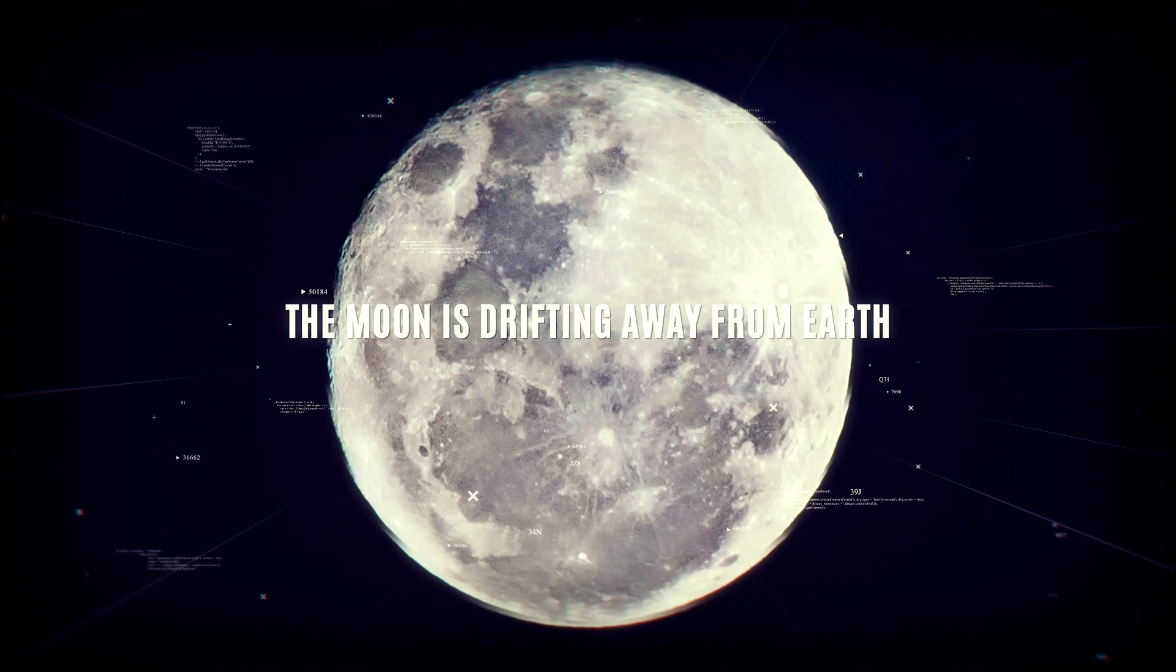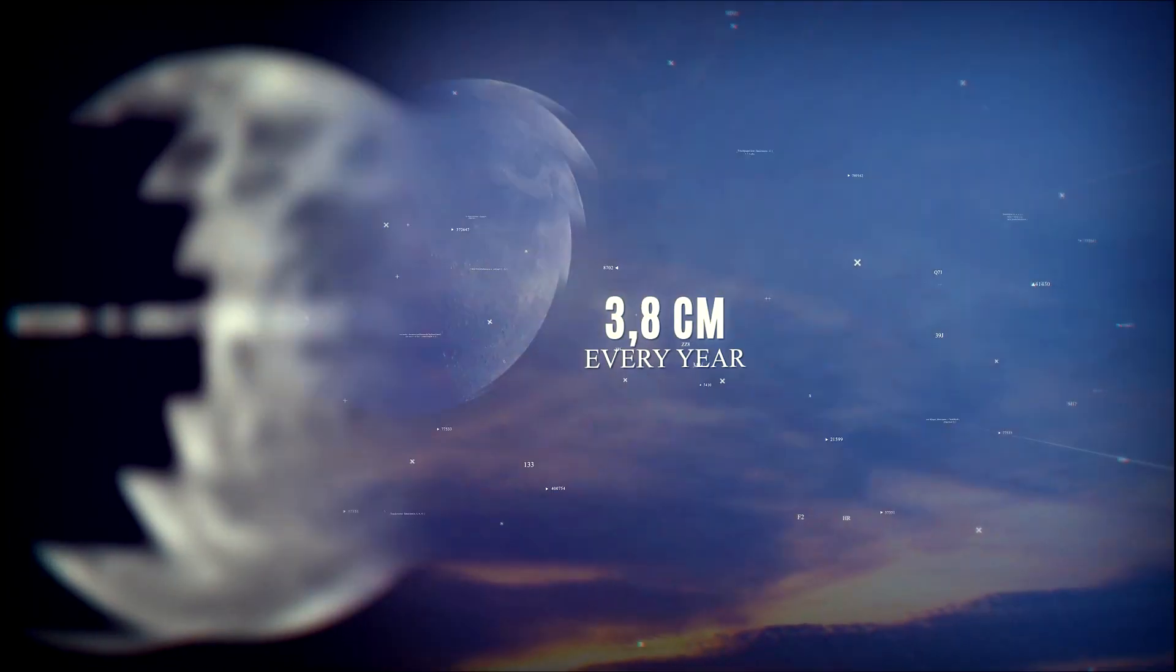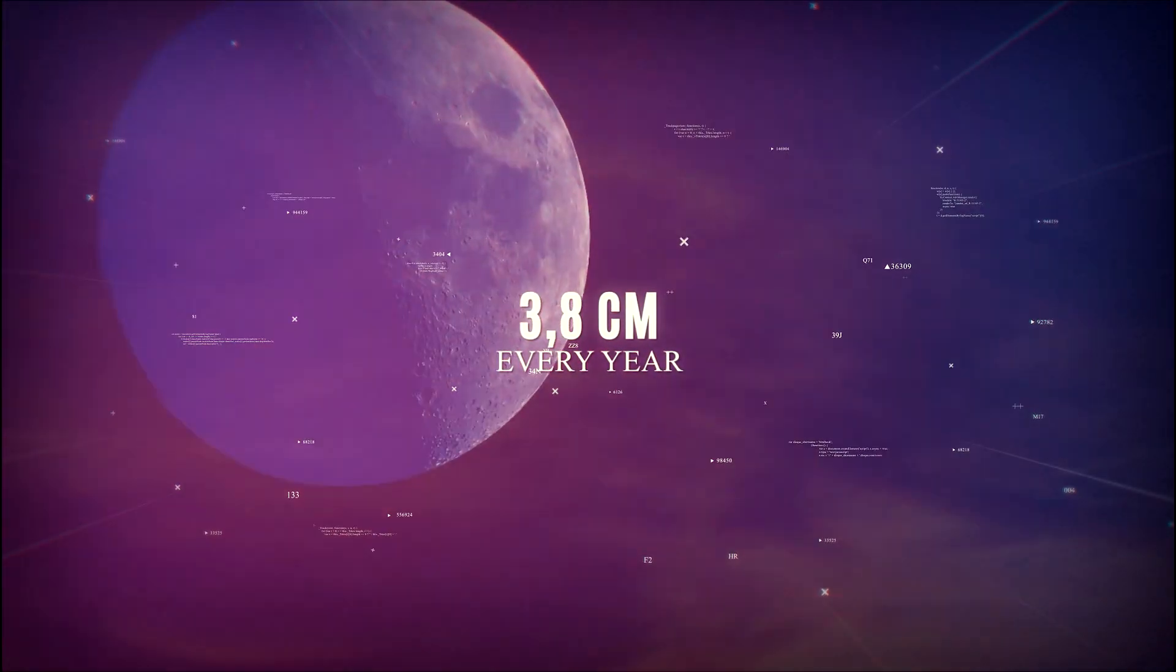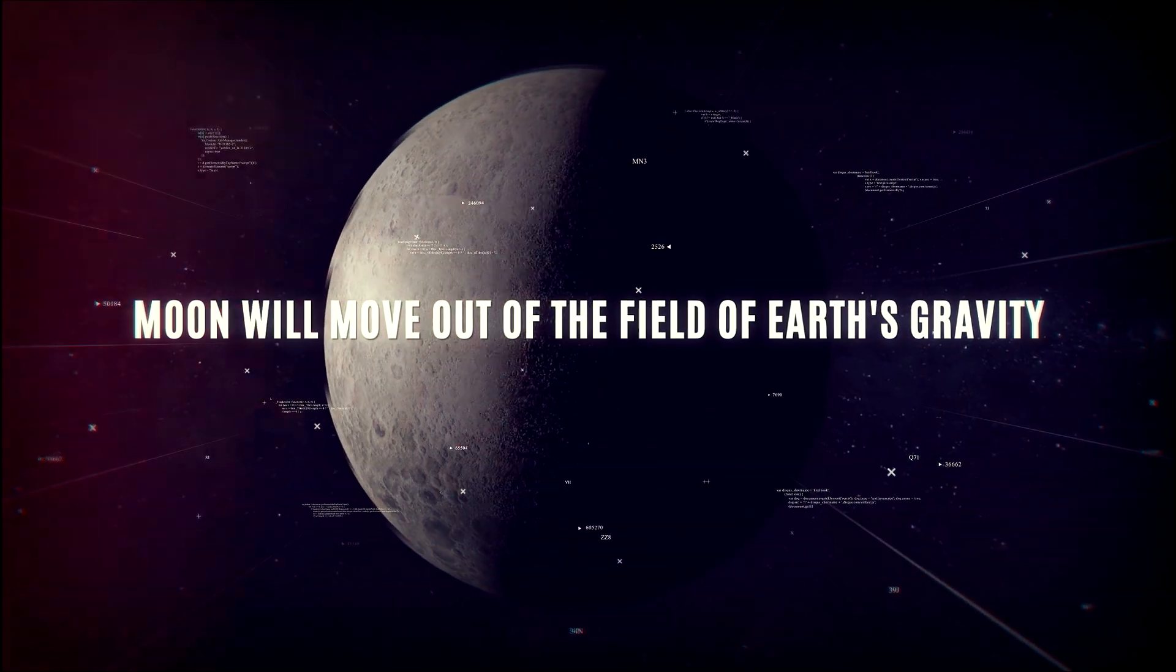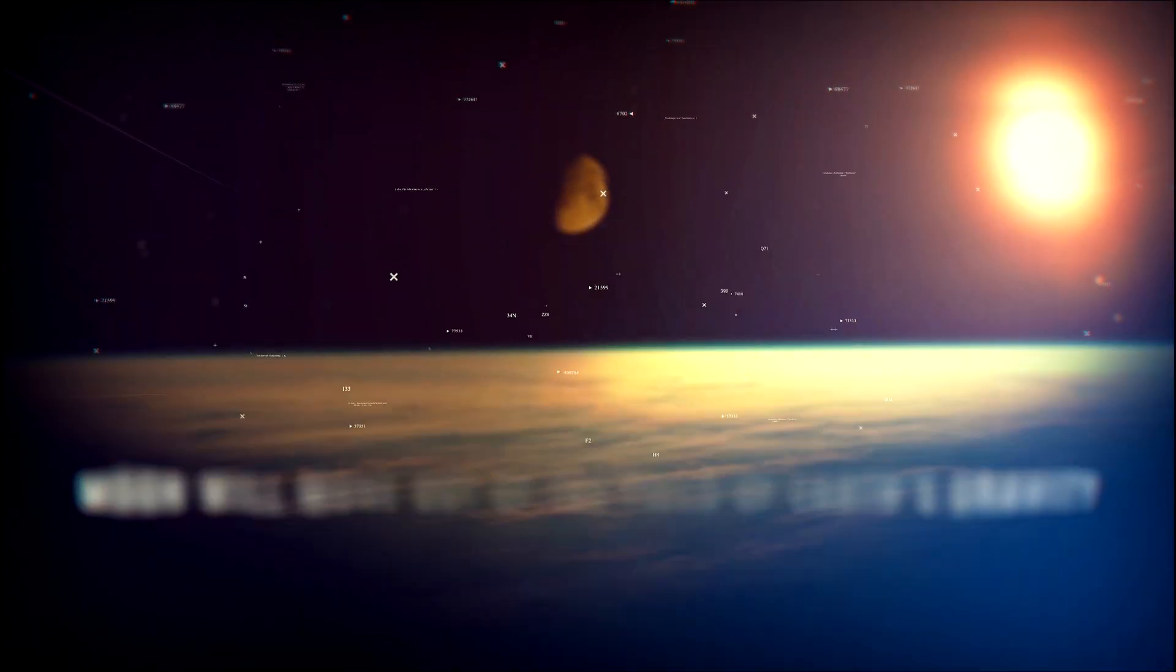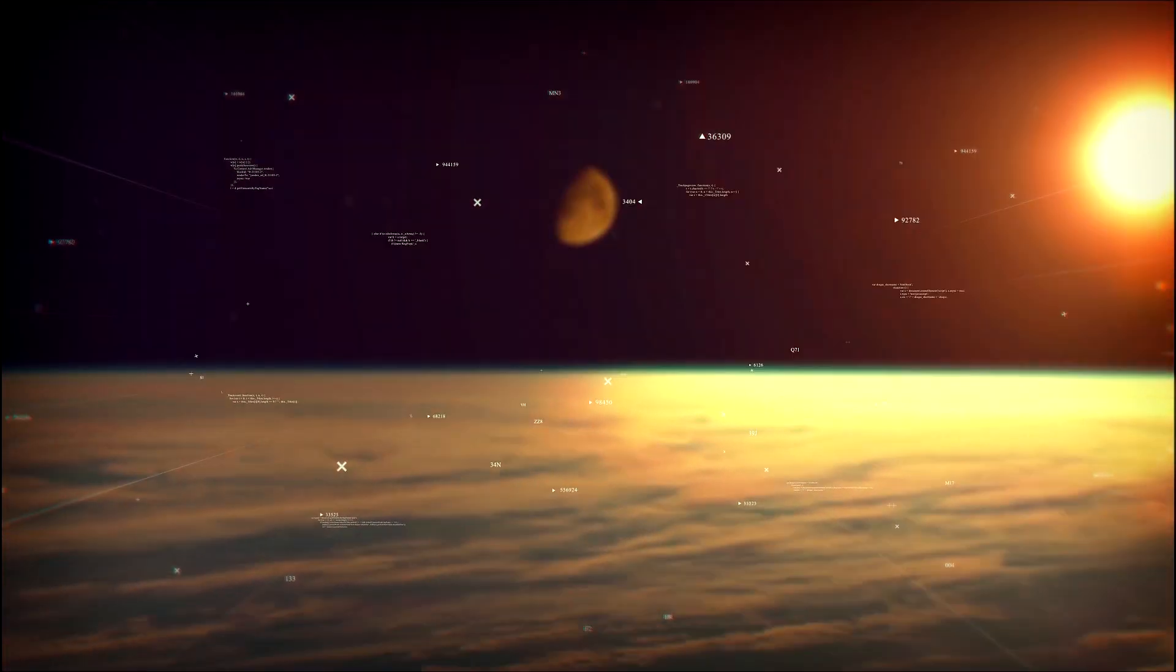The Moon is drifting away from Earth. Every year, the moon is drifting away from the Earth by 3.8 centimeters. Scientists do believe that eventually, the moon will move out of the field of Earth's gravity. However, this won't happen for the next billions of years to come.